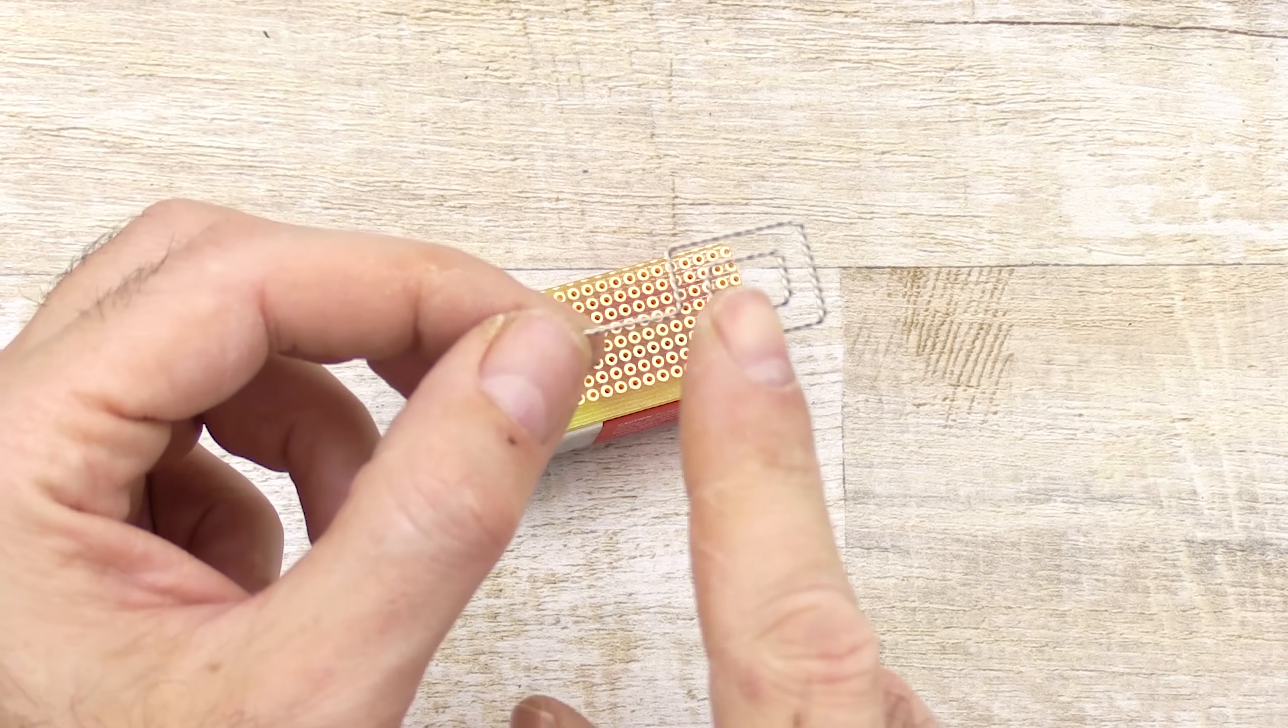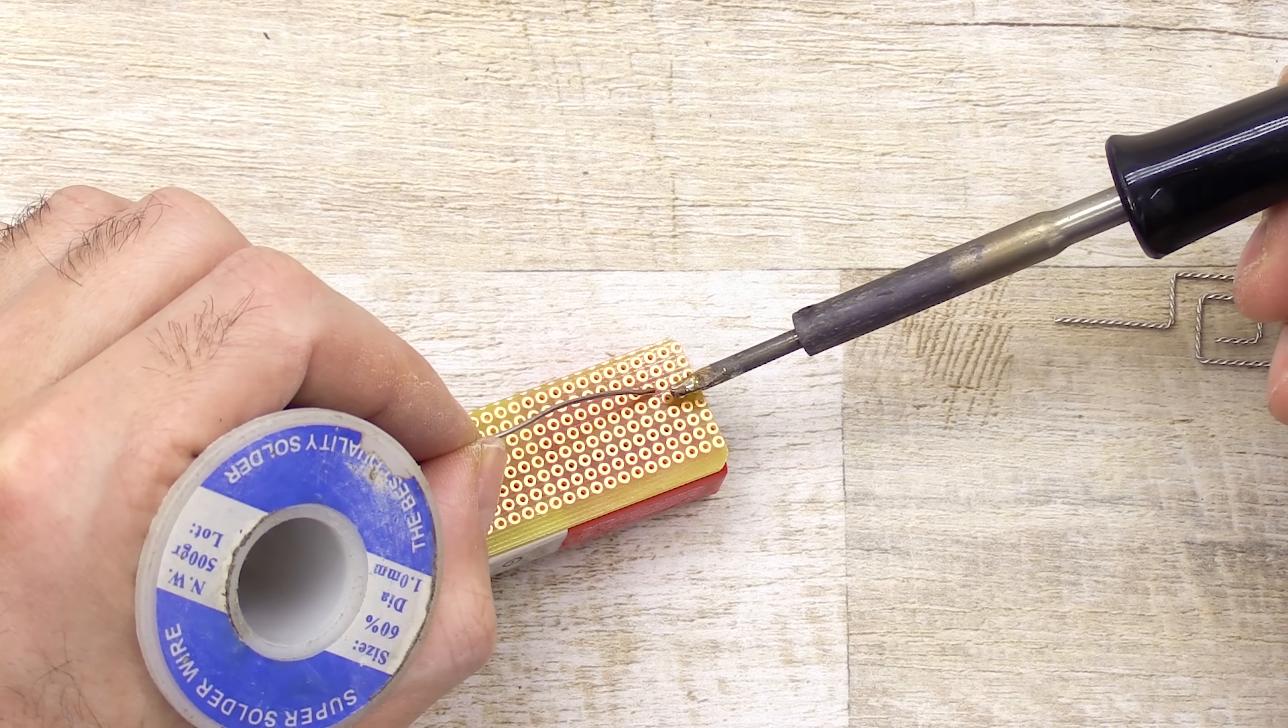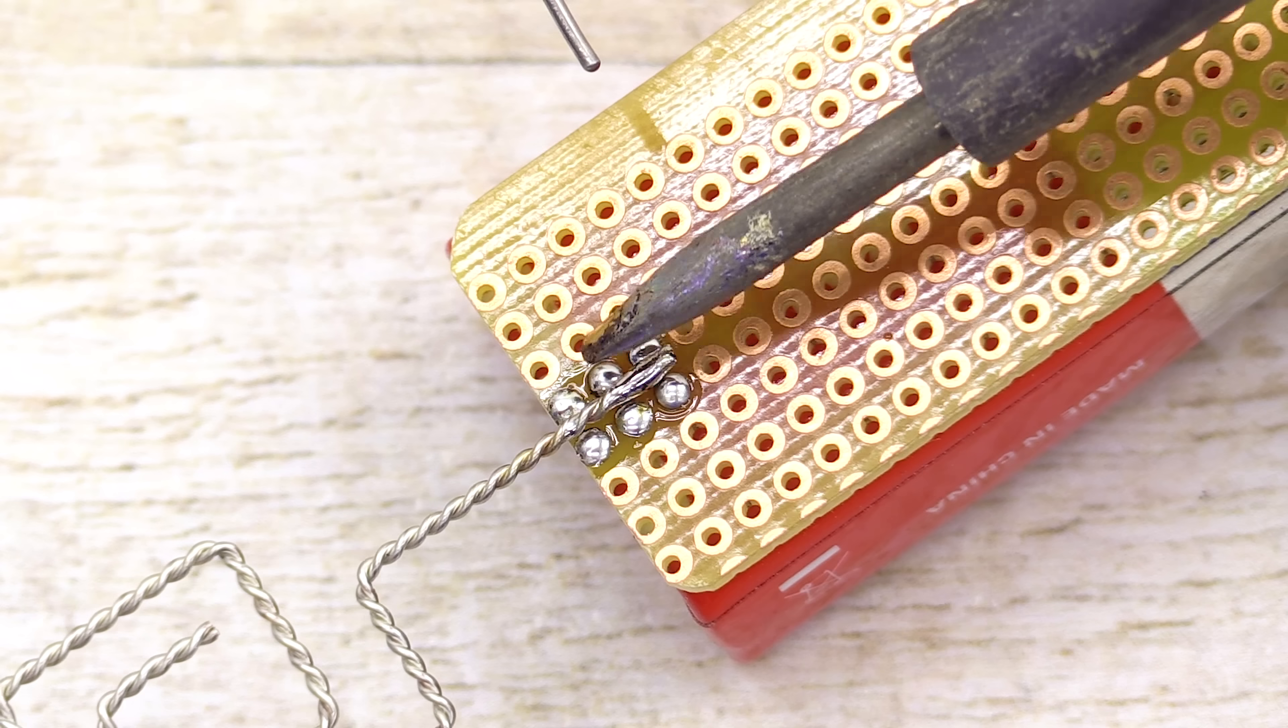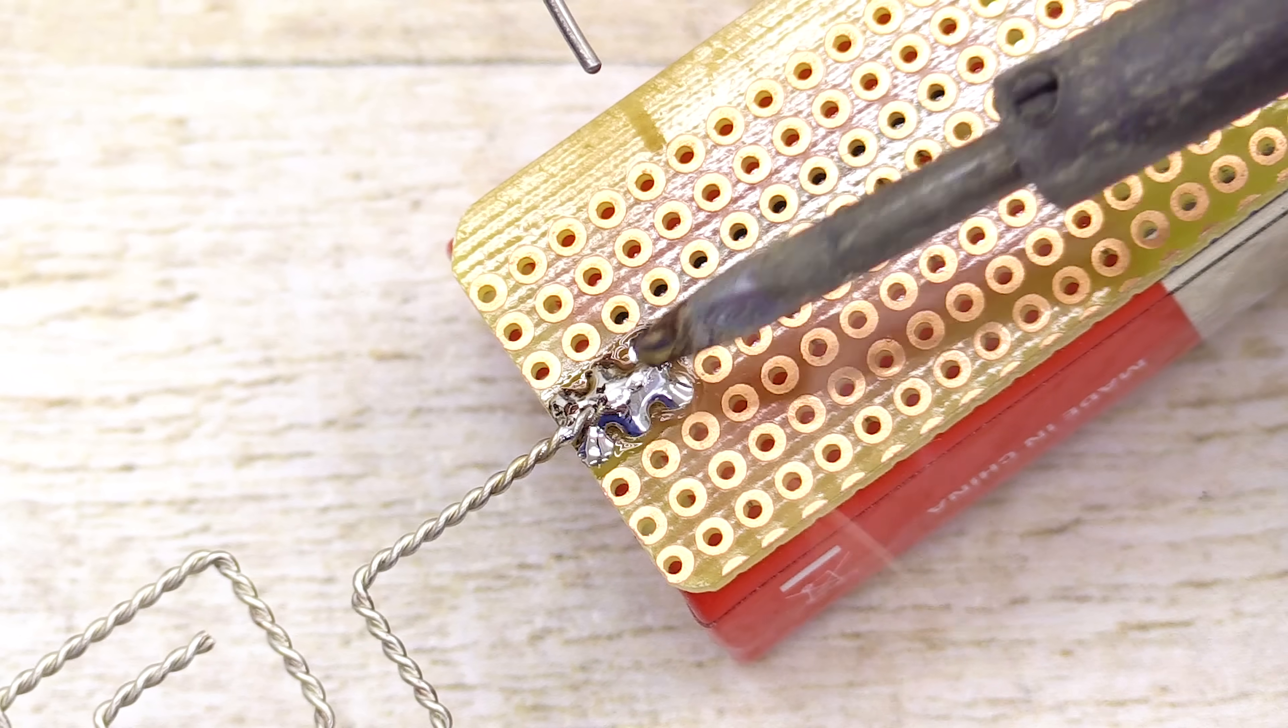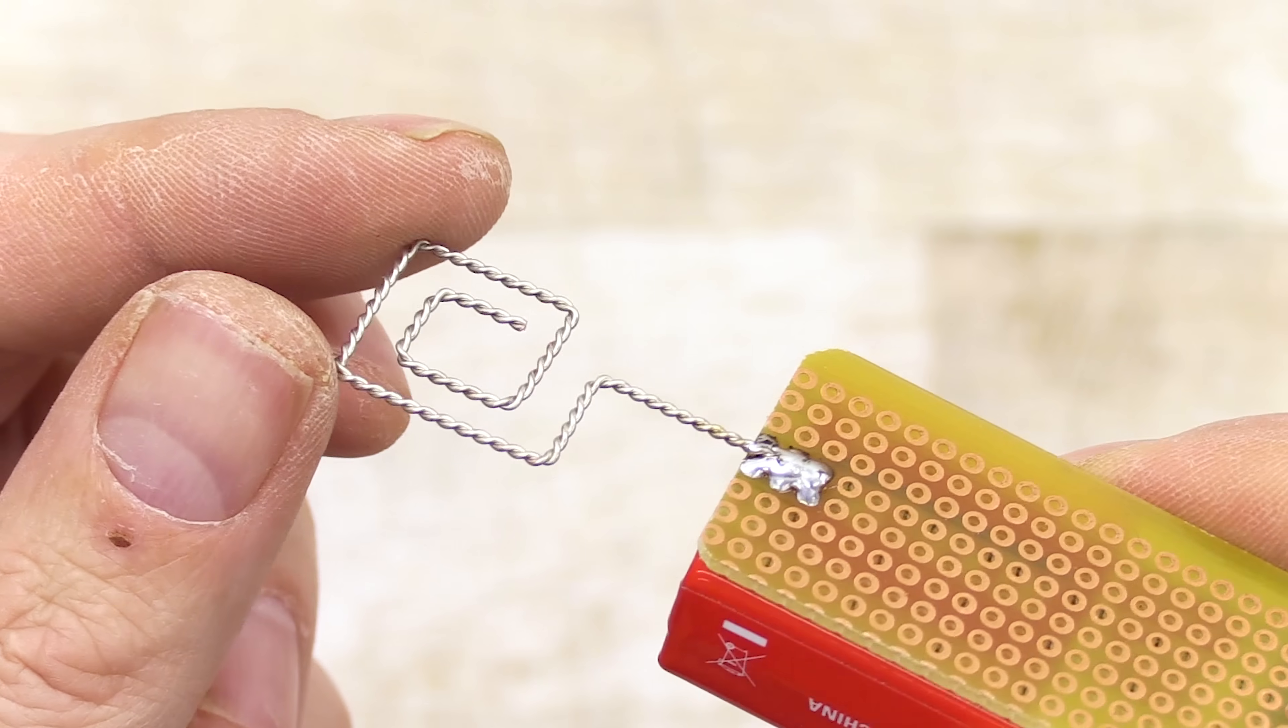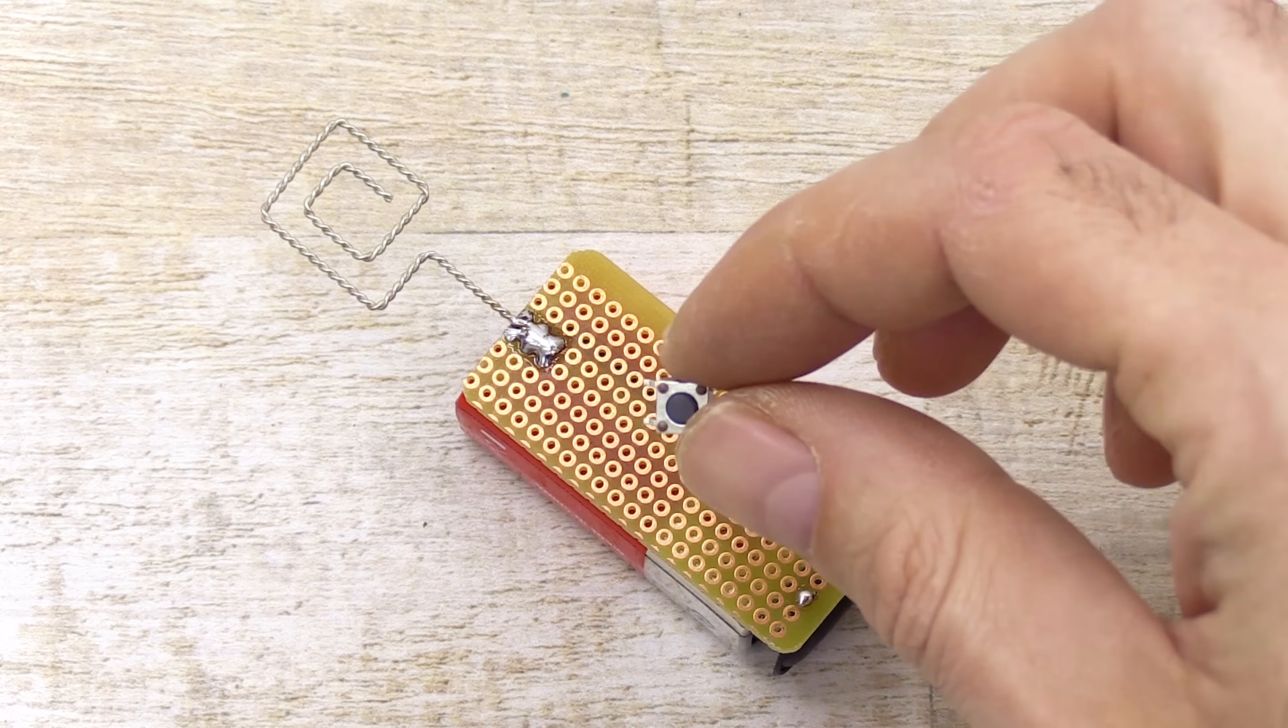Now I can solder the antenna directly onto the PCB. Alternatively, you can install a two-pin terminal block, which allows for easier antenna replacement in case it breaks, or if you want to try a different design. I chose to tin and solder the antenna directly to keep the circuit as simple as possible.